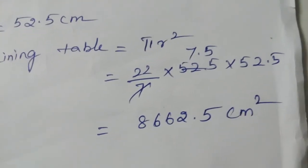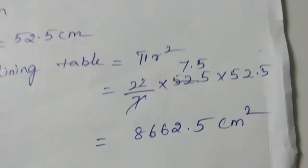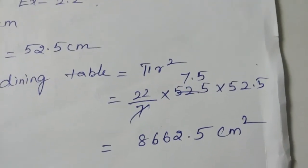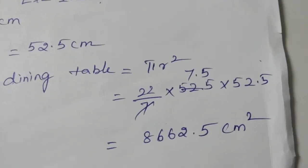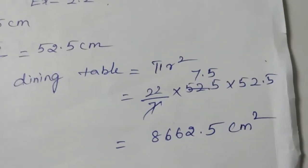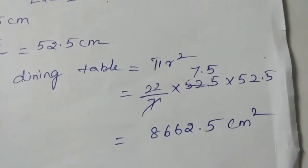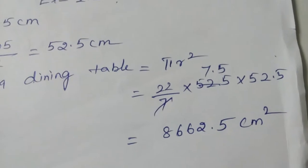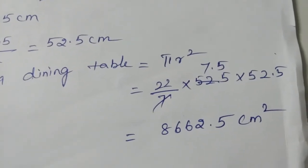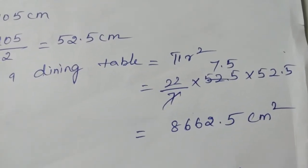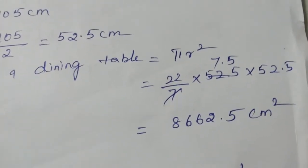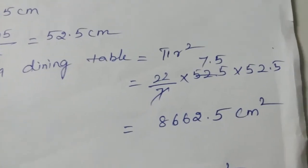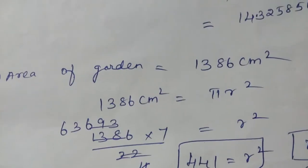The second question you can take as homework. Now, the third question: a sprinkler placed at the center of a flower garden sprays water covering a circular area. If the area watered is 1386 centimeters squared, find its radius and diameter.